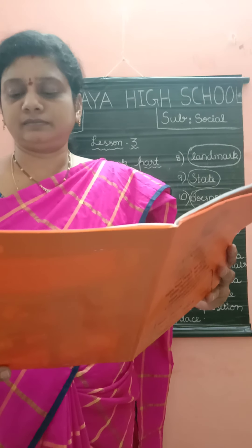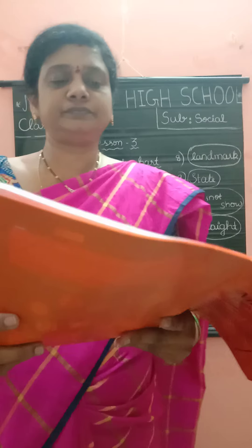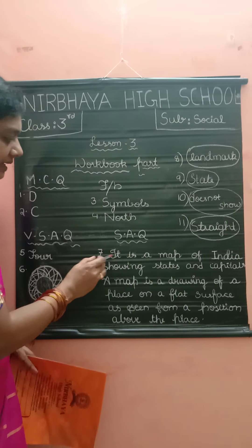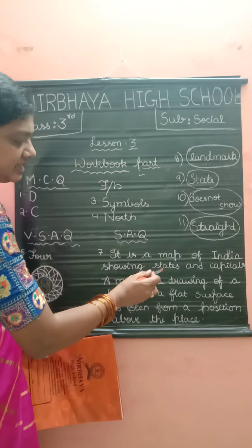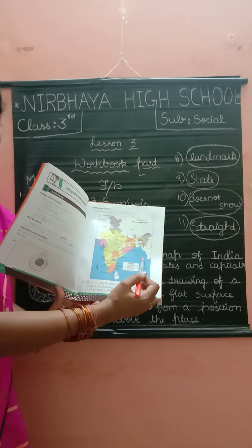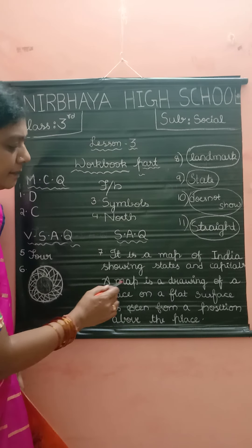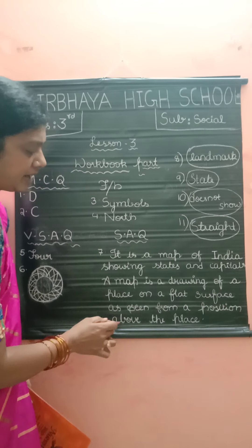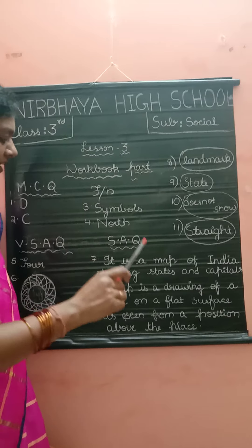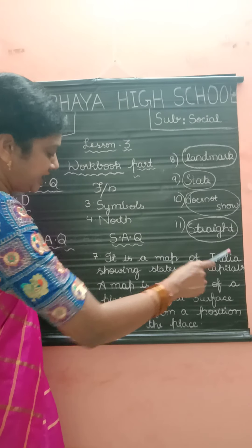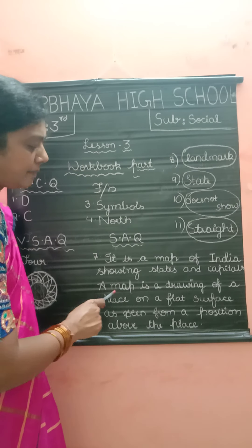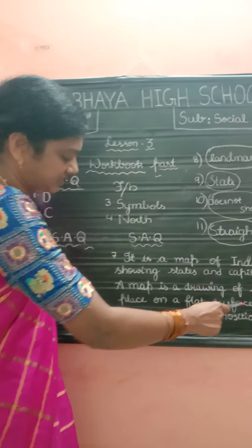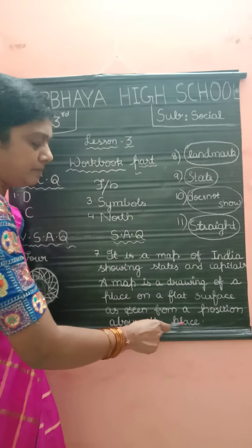And page number 13, short answer question. Identify what is shown in the picture — define it. Seventh answer: it is a map of India showing states and capitals. A map is a drawing of a place on a flat surface as seen from a position above the place.